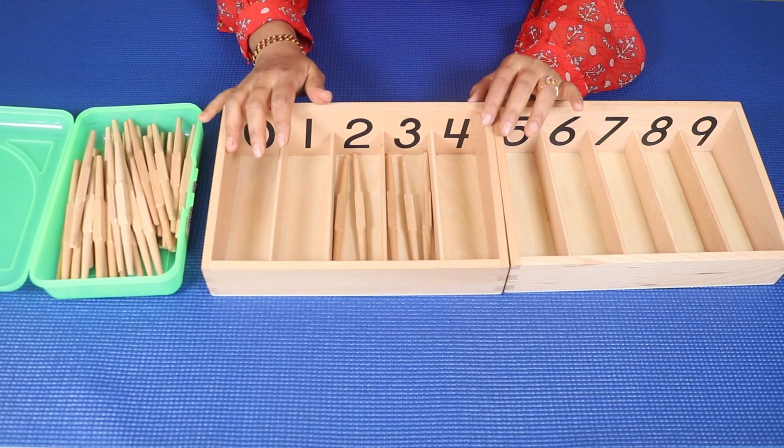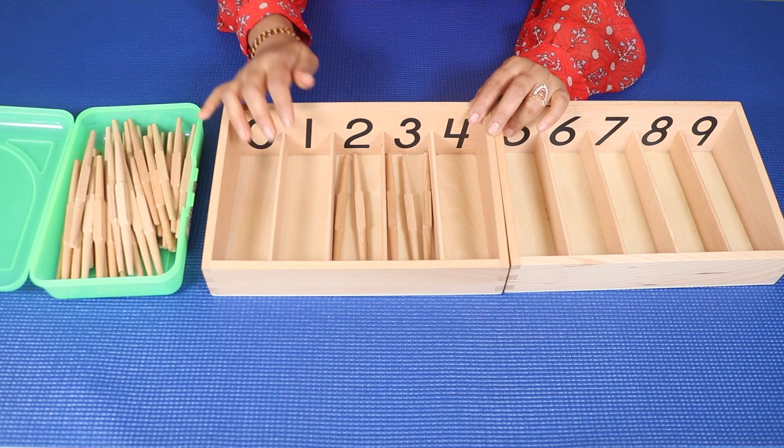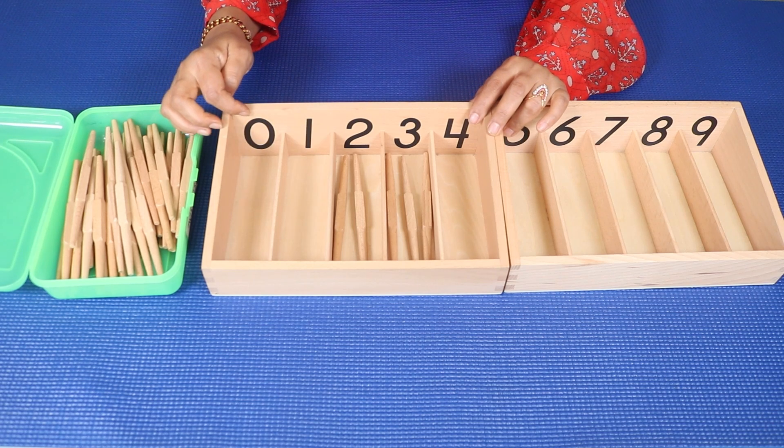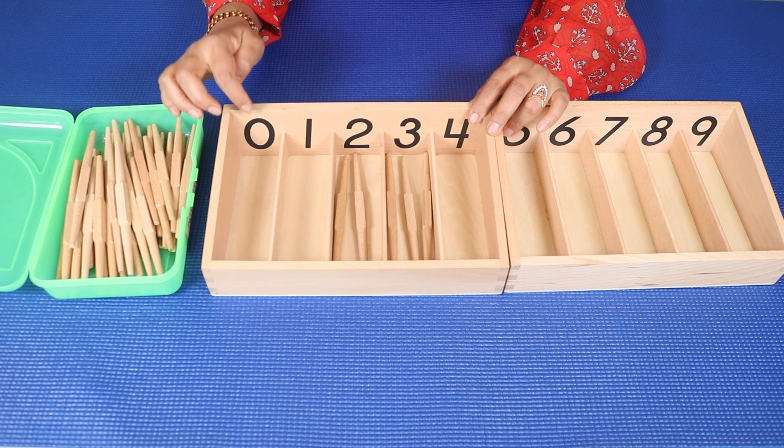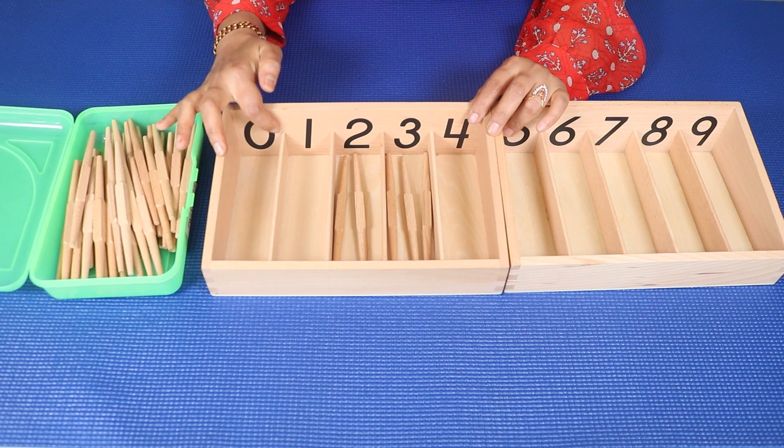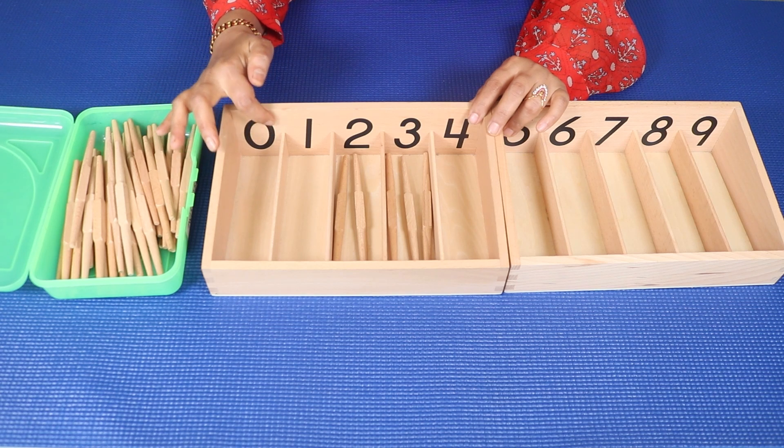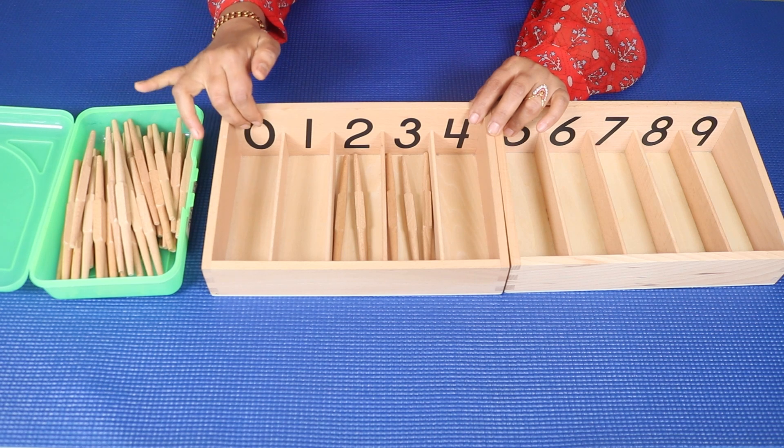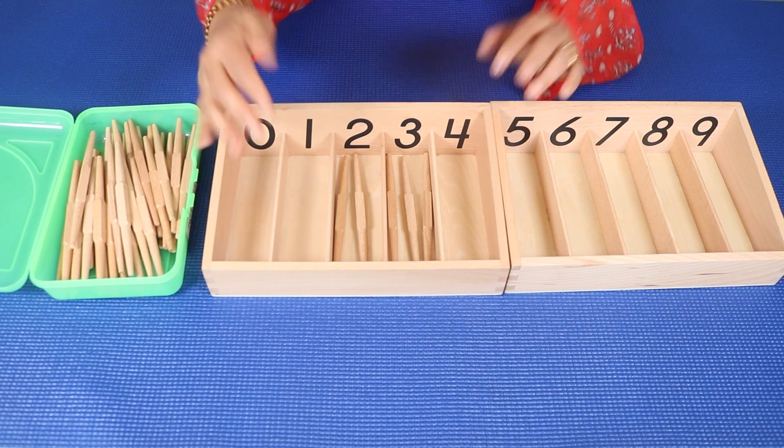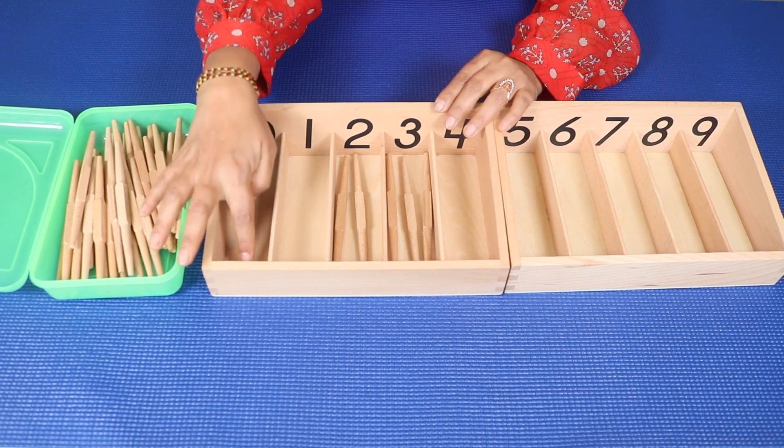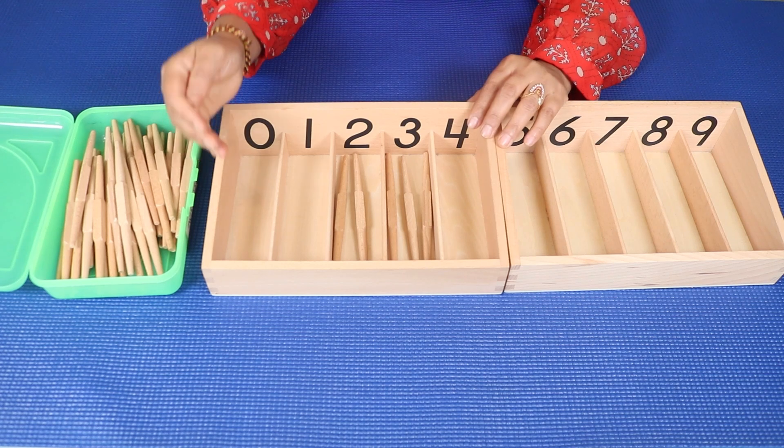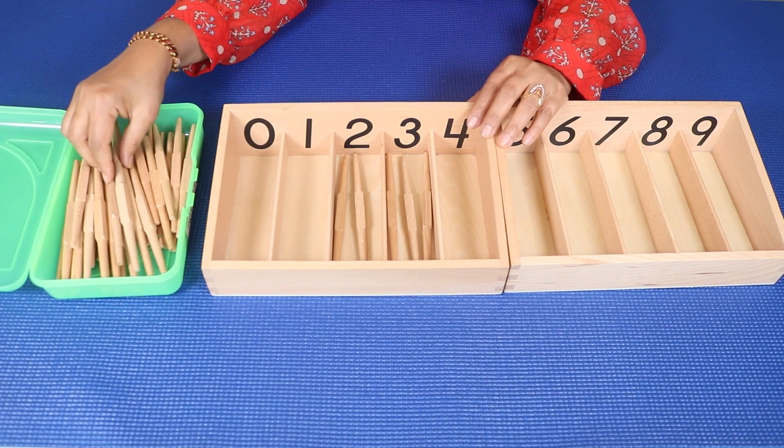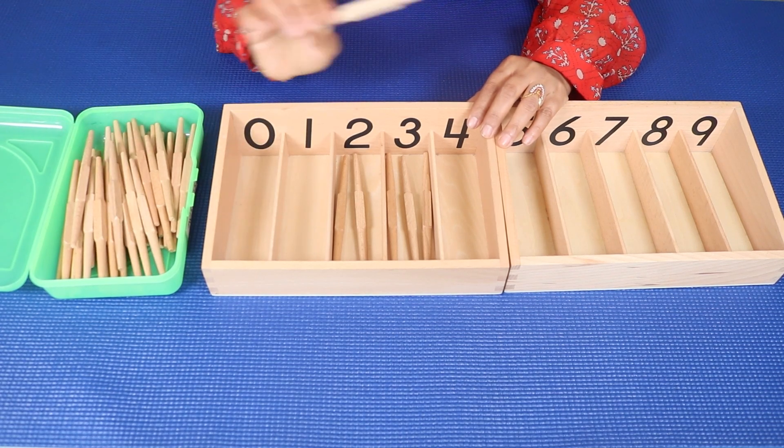This is how you can start this lesson. First, introduce zero to your child. Say 'this is zero.' While saying it, you can trace the number. This is zero. Zero means nothing, so you need not add any spindle here.